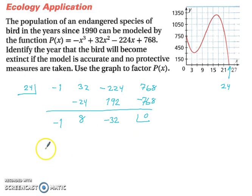So if we write this out, we have P of x equals x minus 24 times negative x squared plus 8x minus 32. So we have now effectively factored this. And that also ends our lesson on factoring polynomials.